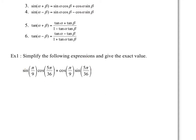That's exactly what we have here — sine alpha cosine beta plus cosine alpha sine beta. So this expression can be rewritten as a simpler version: sine of the sum of those two angles, which is sine of π/9 plus 5π/36. Let's simplify those two angles to see if we can get an exact value.